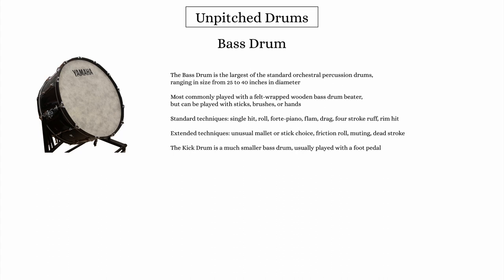There's a standard bass drum beater made of wood and wrapped in felt, but several types of mallets can be effective — like yarn, rubber, snare sticks, and brushes. Here's an example of music for bass drum.